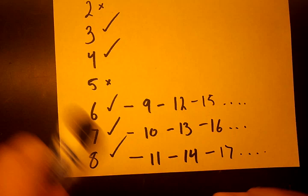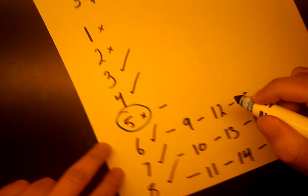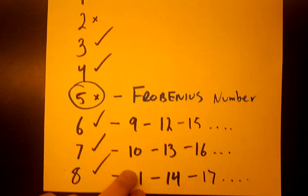So we found that the smallest number, sorry, rather the largest number that we can't form is going to be 5. Because past 5 we can form every single number, and so 5 must be the largest number. So that's why we say 5 is called the Frobenius number for 3 and 4.